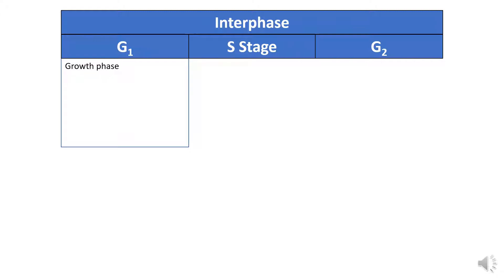G1 is considered a growth phase. At this point the cell has just undergone cell division, and it's going to be making additional organelles to ensure its ability to function — so if it's a muscle cell, it may be making more mitochondria, for example. A cell also has a responsibility to replace itself when it dies, so the cell will also be gearing up for cell division. During the G1 phase, the cell has to pass a primary checkpoint to ensure it's in good enough shape to reproduce.